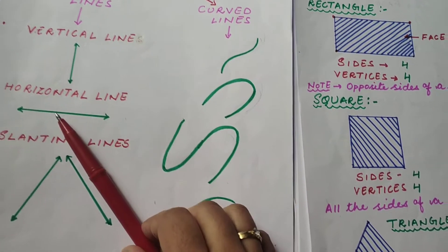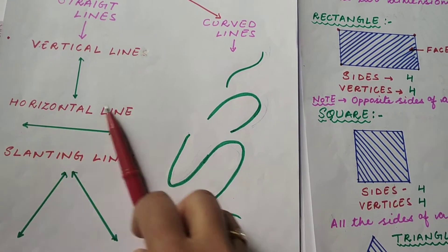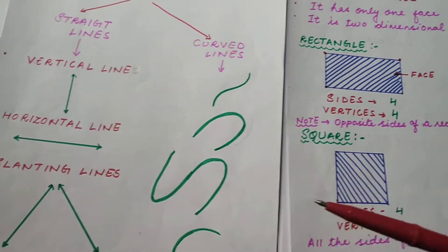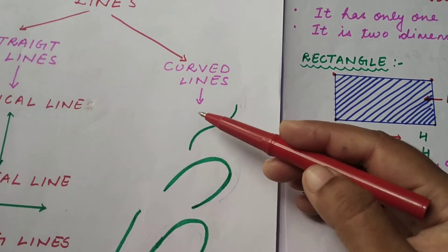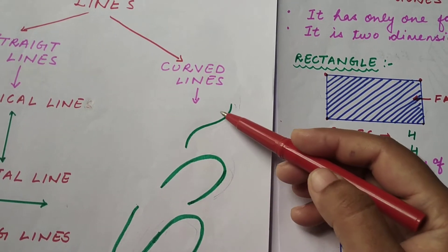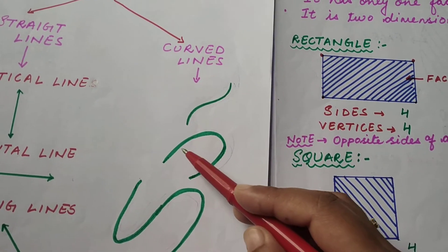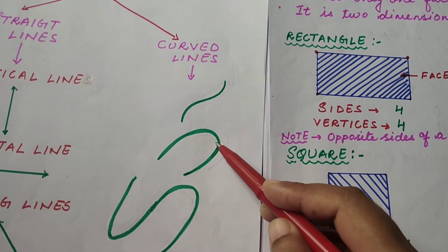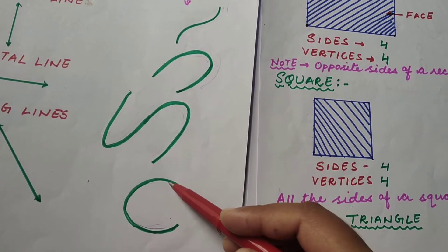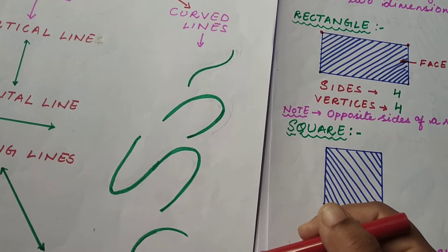And these are slanting lines. Next are curved lines. The lines which have a curve are called curved lines. See, this is a curve in this line — curve here and curve here. So these lines are called curved lines.